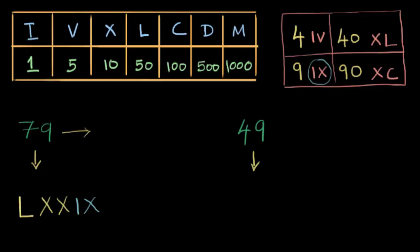This 49 is very interesting. I mean, I was tempted when I saw 49. My temptation was to write IL. Like, why not? 1 less than 50. It turns out that we do not do this. Like we said, we only use subtractive notation for these numbers.